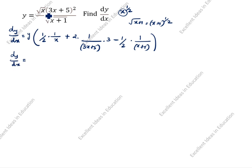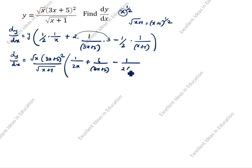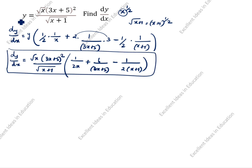dy/dx is equal to y — and y is root x times (3x + 5) whole squared divided by root of (x + 1) — times open bracket 1/(2x) plus 6/(3x + 5) minus 1/(2(x + 1)). This is the answer. This is the first method.